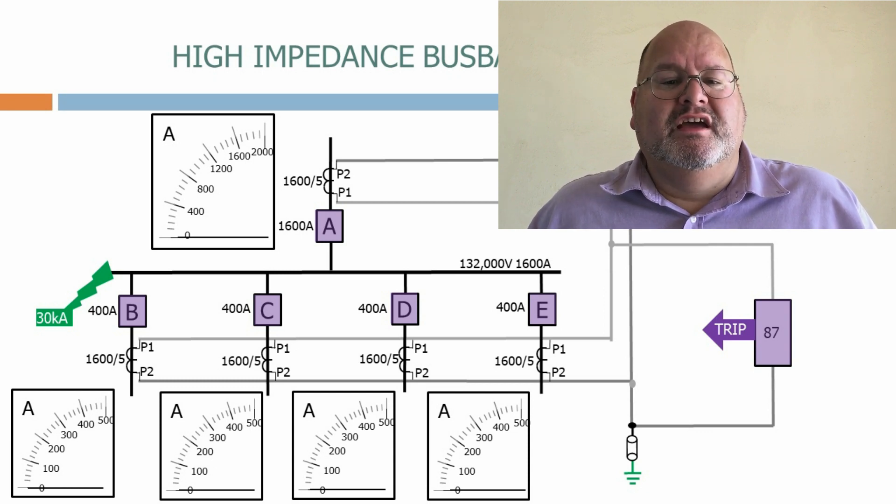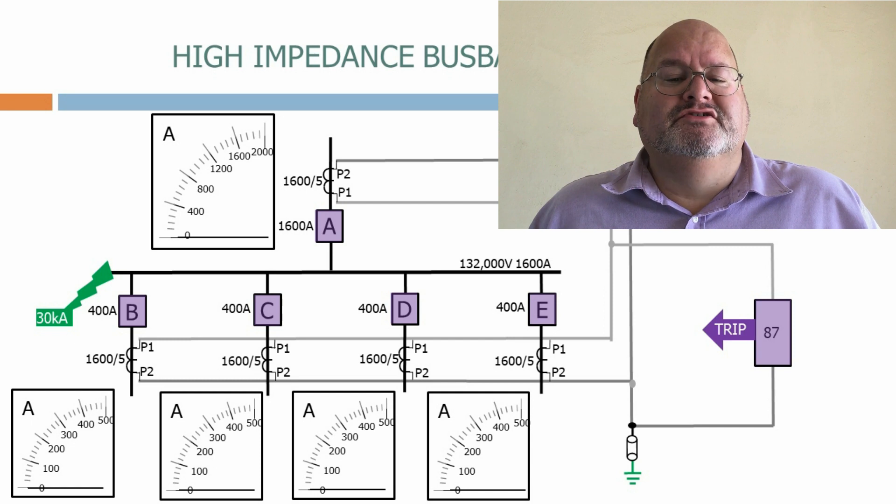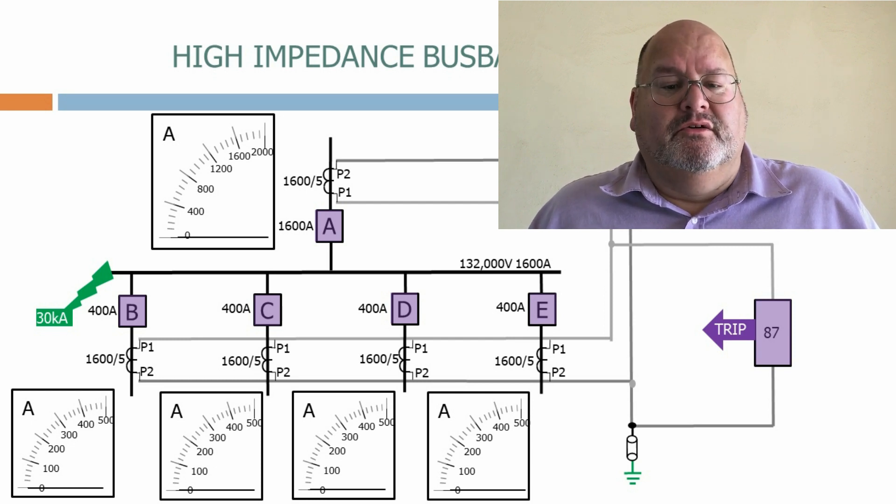As we've seen from the calculations, there is normally no middle ground here. During no-fault and through-fault conditions, the currents that enter the relay are virtually zero, whilst during an internal fault it will be tens or hundreds of amps. The certainty of a fault occurring is why this type of system is so reliable and secure.